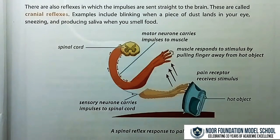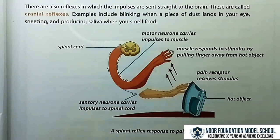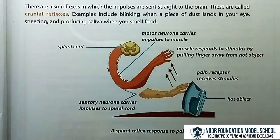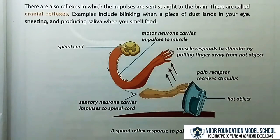When you touch something hot like an iron, a sensory neuron carries impulses to the spinal cord. Motor neurons then carry impulses to the muscle. The muscle responds to the stimulus by pulling the finger away from the hot object.